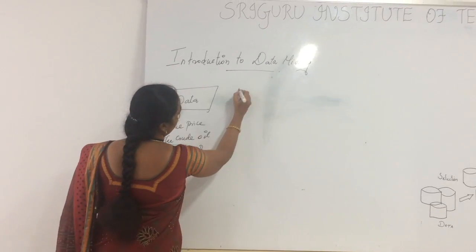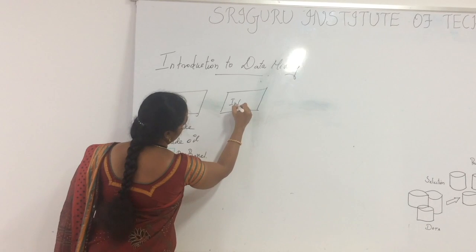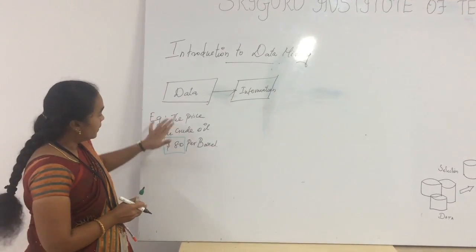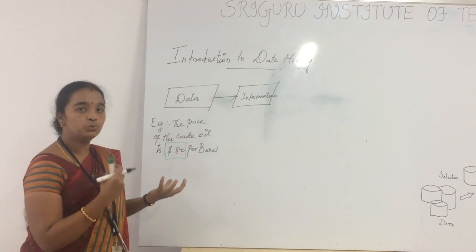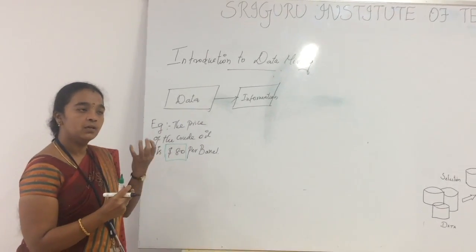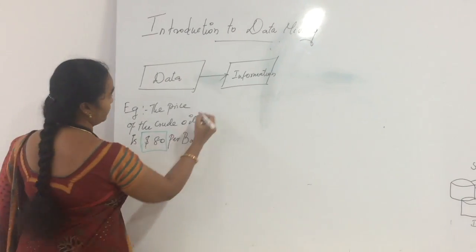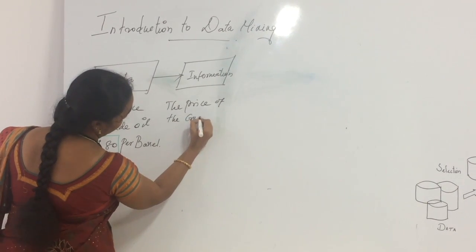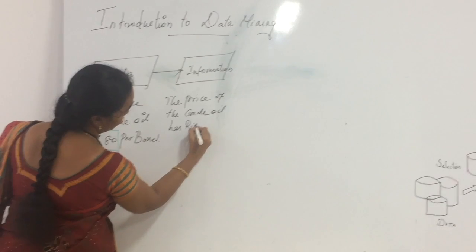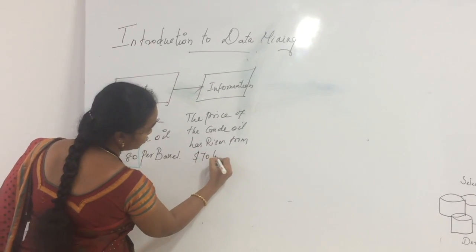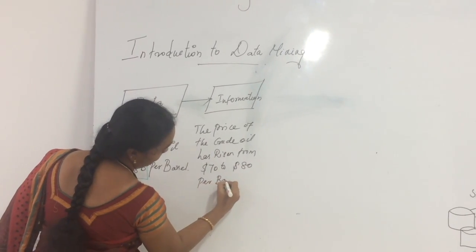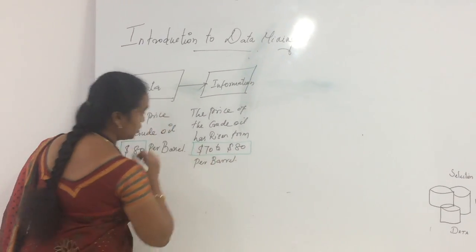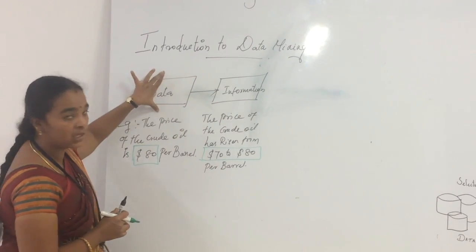Next, one more thing we need to know is what is information. The price of the crude oil has risen from $70 to $80 per barrel — this is considered to be information. So we are getting the information from the data.